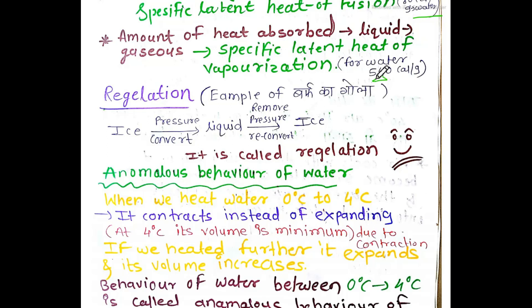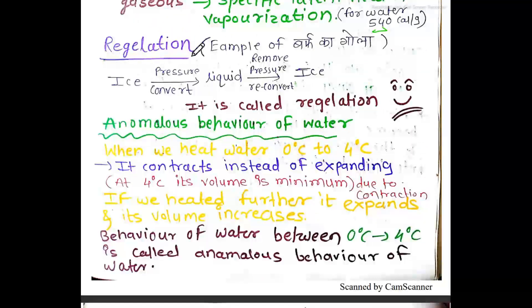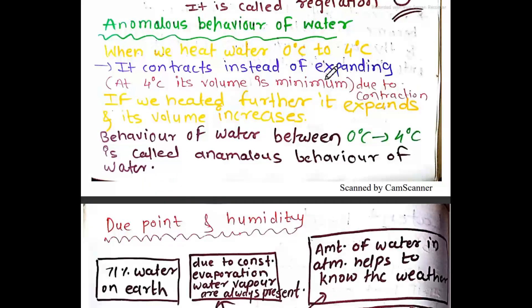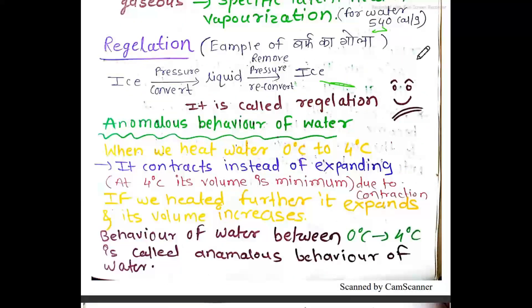The amount of heat absorbed by liquid to convert to gases is called the specific latent heat of vaporization. For water it is 540 calories per gram. This is also related to the concept of regelation.